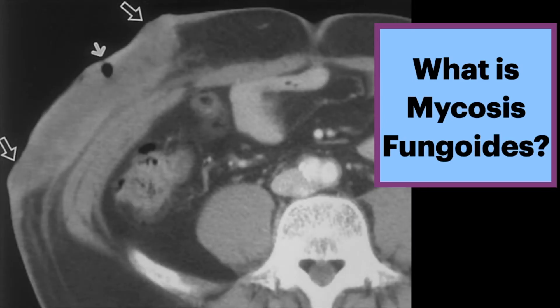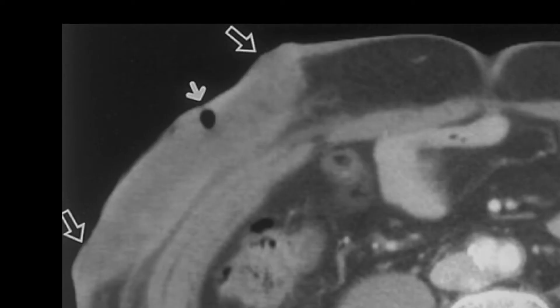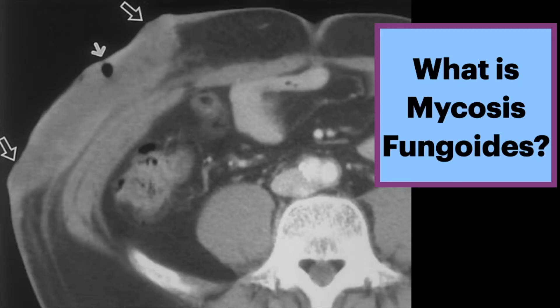On imaging, pay particular attention to skin thickening or cutaneous lesions. This axial CT shows a large tumor denoted by the open arrows in the anterior abdominal wall. This tumor involves the skin and subcutaneous fat. Note the small air bubble suggestive of an ulcer, shown by the solid arrow.